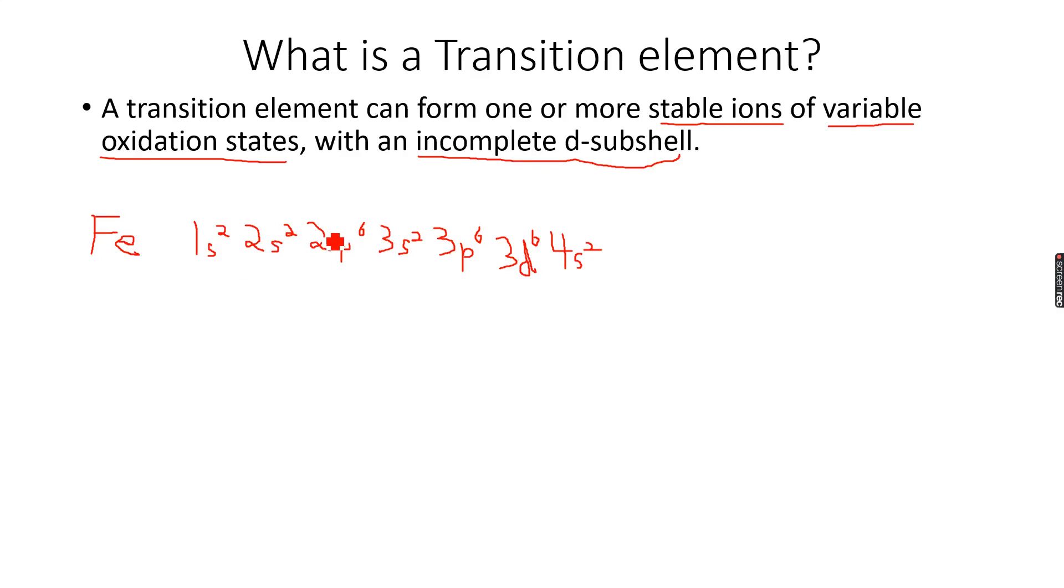2 plus 2, 4, plus 6, 10, plus 2, 12, plus 6, 18, plus 6, 24, plus 2, 26. So we have a total of 26, the electronic configuration of iron, which has an atomic number of 26.